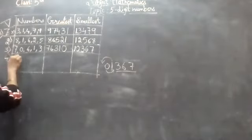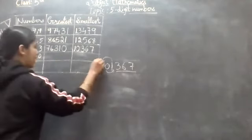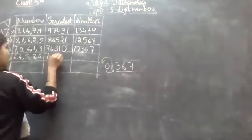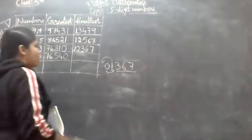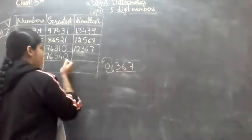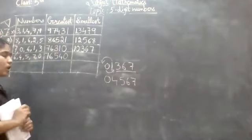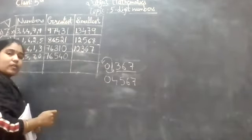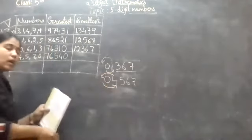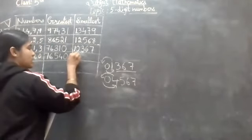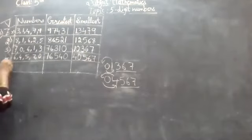Let us move on to the fourth example: 1, 6, 4, 5, 7, 0. See the bigger number and arrange: seven is bigger, then six, then five, then four, then zero. So the greatest is 76,540. Again here we got zero. So for the smallest, write the opposite: zero, four, five, six, seven — but we swap zero and four. So four comes first, then zero, then five, six, seven. We changed the places of zero and four, same as before.